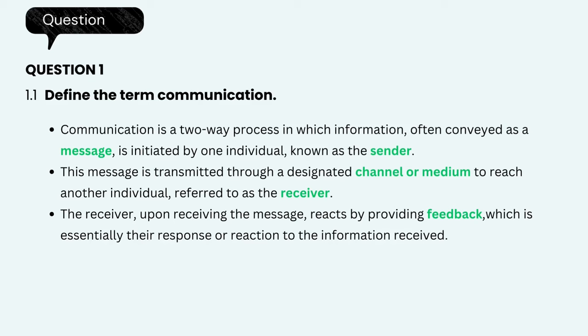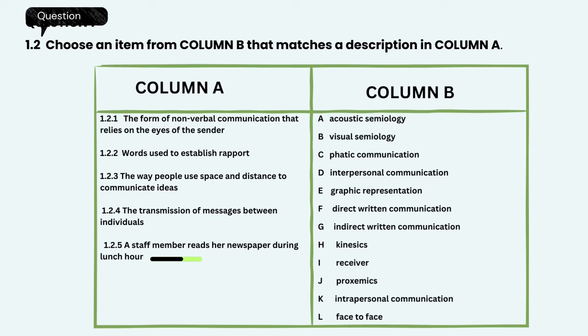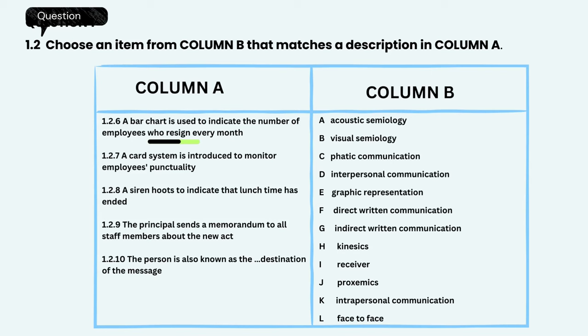Question 1.2. Choose an item from column B that matches a description in column A. The form of non-verbal communication that relies on the eyes of the sender — the correct answer is H, Kinesics. Words used to establish rapport — the correct answer is C, Phatic communication. The way people use space and distance to communicate ideas — the correct answer is J, Proxemics. The transmission of messages between individuals — the correct answer is D, Interpersonal communication. A staff member reads her newspaper during lunch hour — the correct answer is G, Indirect written communication. A bar chart is used to indicate the number of employees who resign every month — the correct answer is B, Visual semiology.